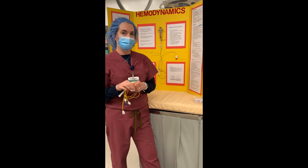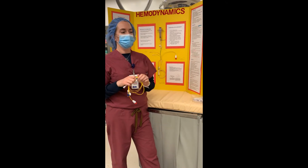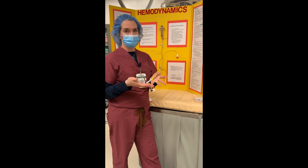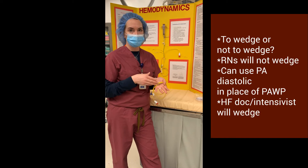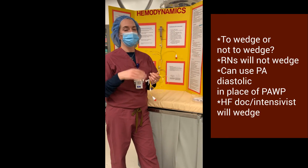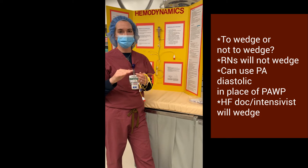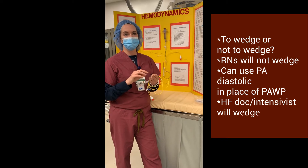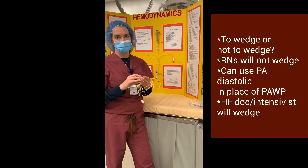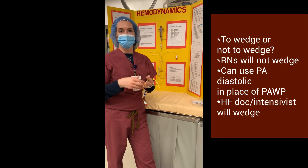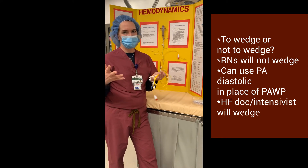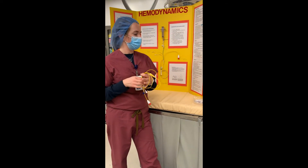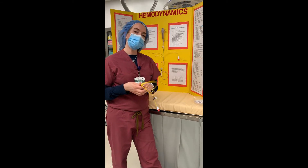The doctor will tell you how often they want a Fick. In addition to that, you can use either a wedge number that the physician has given you, or you can use your pulmonary artery diastolic in place of the wedge. Have that conversation with your physician: are they going to be wedging the balloon for you so you can get a wedge number, or should you use the pulmonary artery diastolic? These situations will be very patient-specific, so just clarify that information.